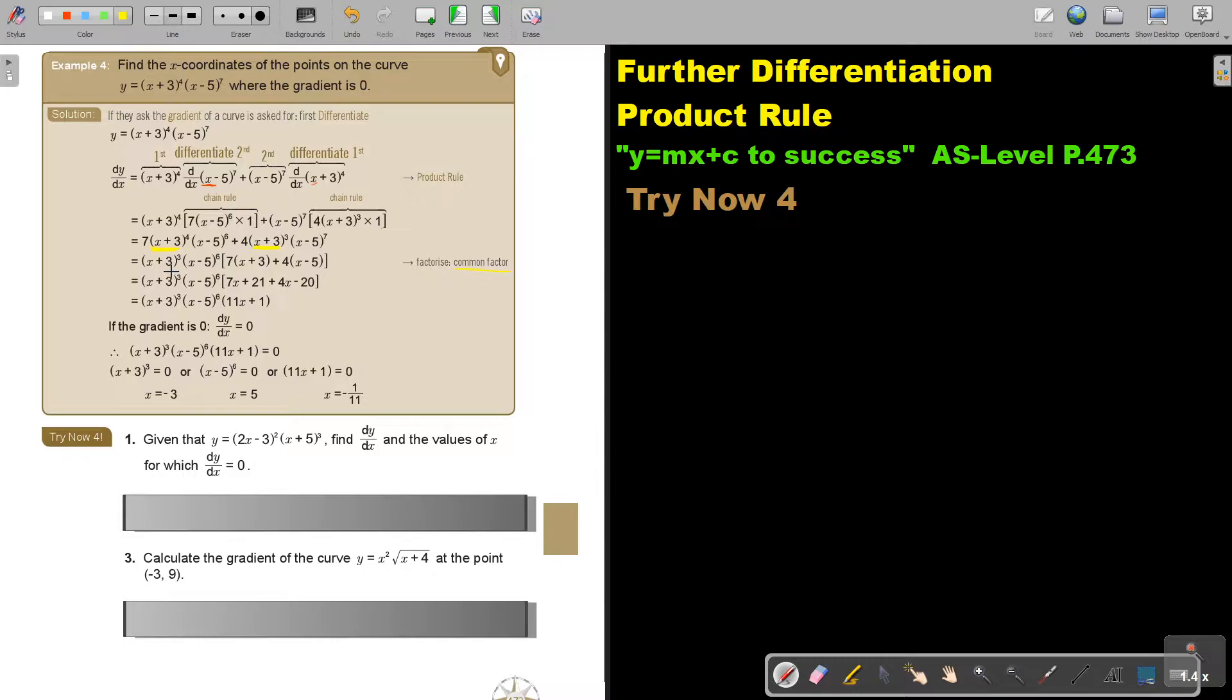Now what will be the common factor? It's x minus 3, but what is the smallest one? The smallest one is 3. Then x minus 5, and what is the smallest one? The smallest one is 6. And then if I divide, the 7 is left. This x plus 3 cancel out, but there's 1.